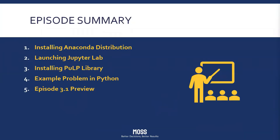Today's episode has five parts. To start, I will show viewers where to go to get their Anaconda distribution. After that, I will do a walkthrough in parts two and three on launching JupyterLab, navigating the interface, and installing the PuLP library. In part four, I will solve the example problem from episode one in a JupyterLab notebook. Finally, I will conclude with a preview of episode three. One disclaimer up front: I won't be giving a detailed introduction on programming in general, since there are a lot of really good and free resources out there. Today I will cover some things I feel are important as they relate to optimization.